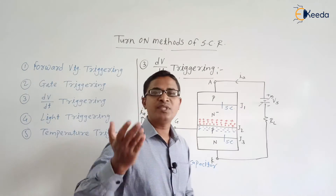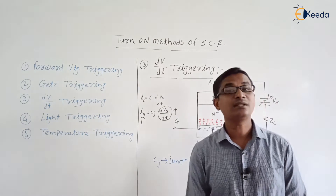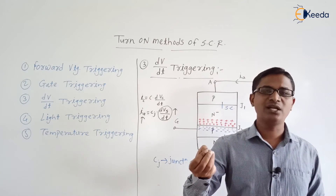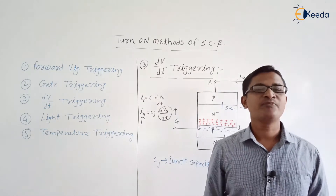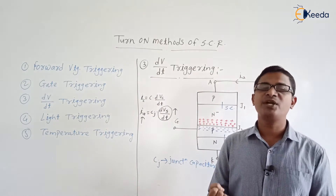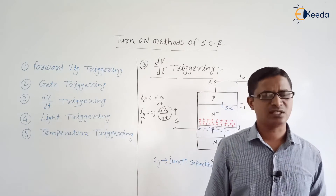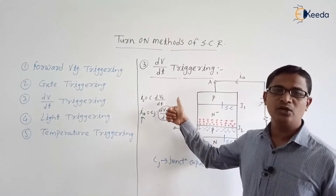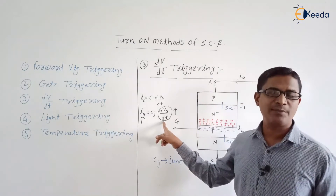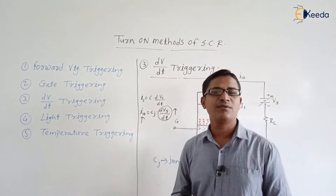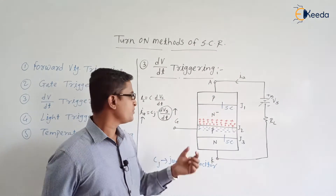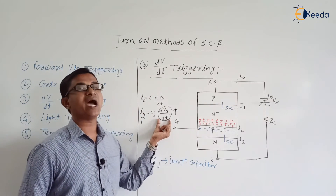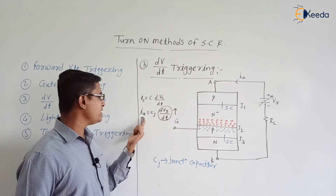The difference between SCR in the off state and SCR in the on state is: when SCR is in the off state, the current flowing through it is very, very low — that is the forward leakage current. When SCR is in the on state, the current value is high. So if we increase the value of dVs/dt to a high value — meaning within a short time interval, if we change the value of the supply voltage by a large amount — then dVs/dt will be high, and due to that high dVs/dt, Ia will be more.